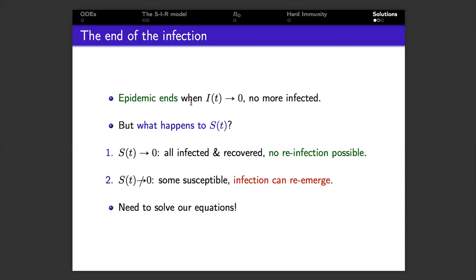Now let's turn to what happens at the end of the infection. So after some time the number of infected does go to zero and the epidemic ends. Now one can use something called a stability analysis to show that this must be the case, but the question we want to ask here is what happens to S at the end of the epidemic.